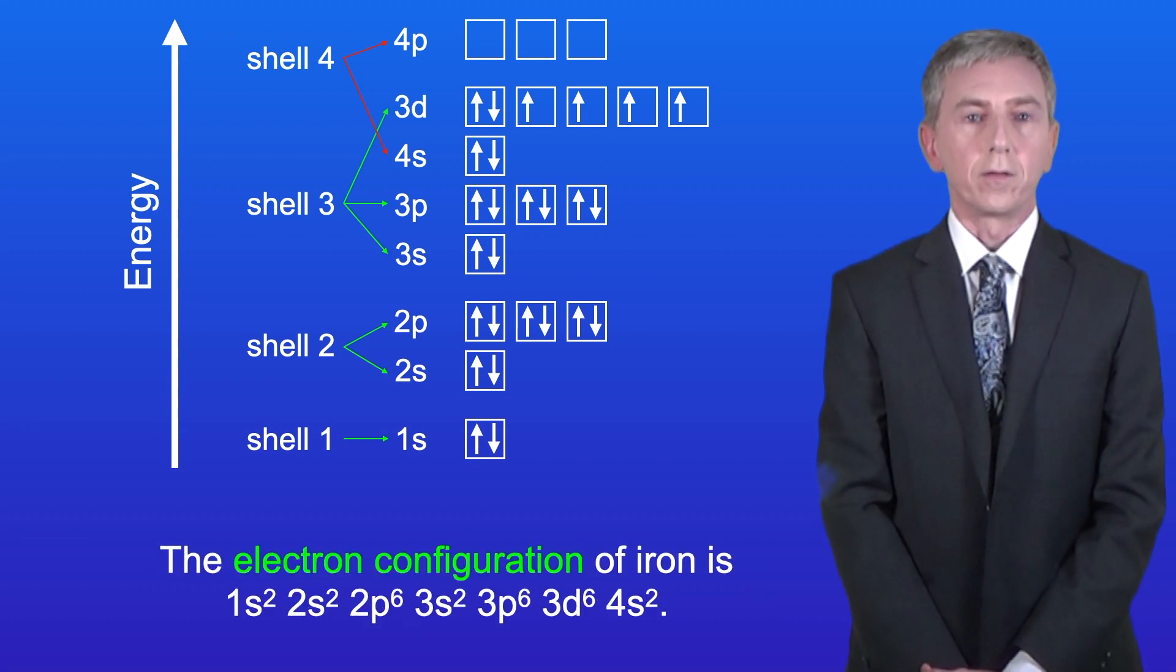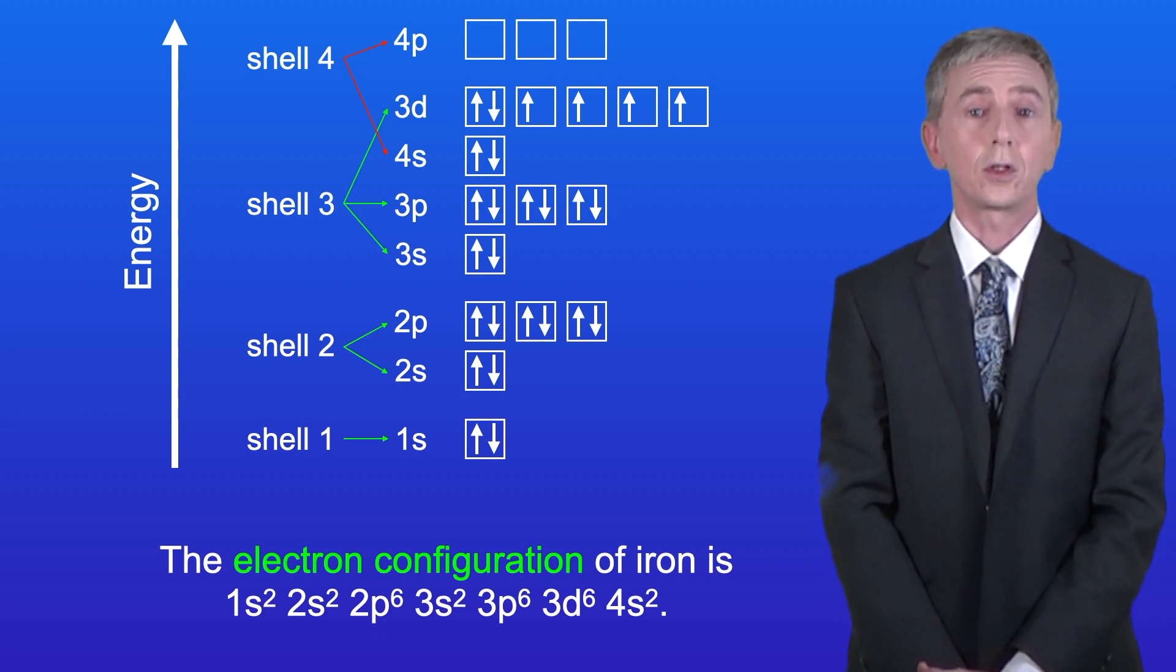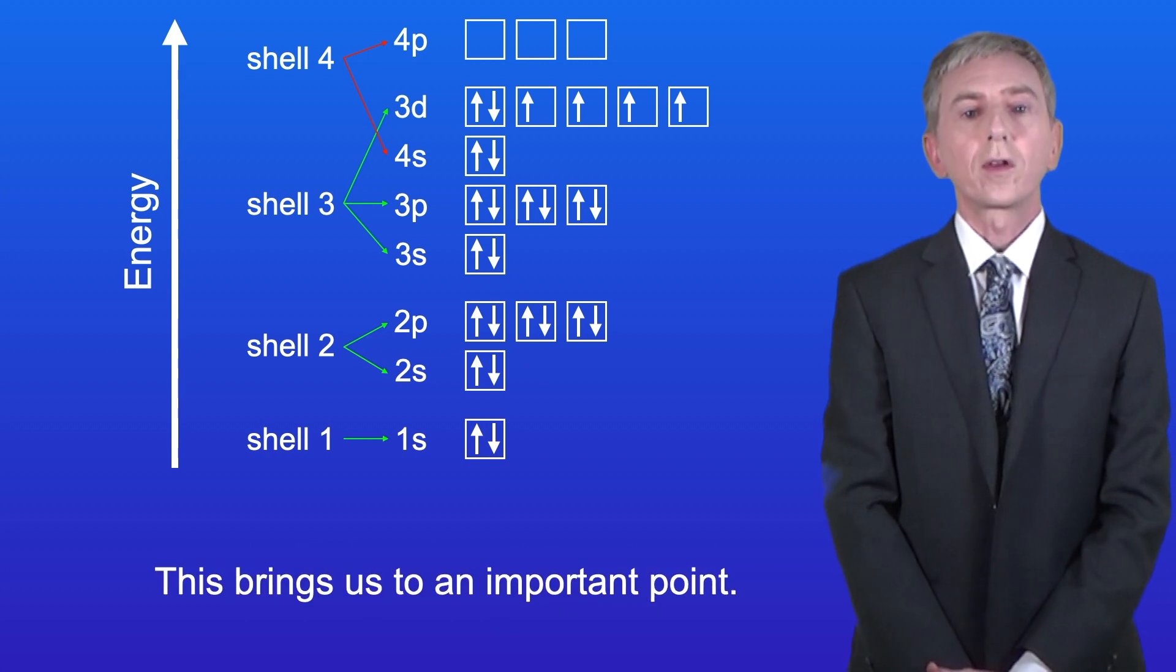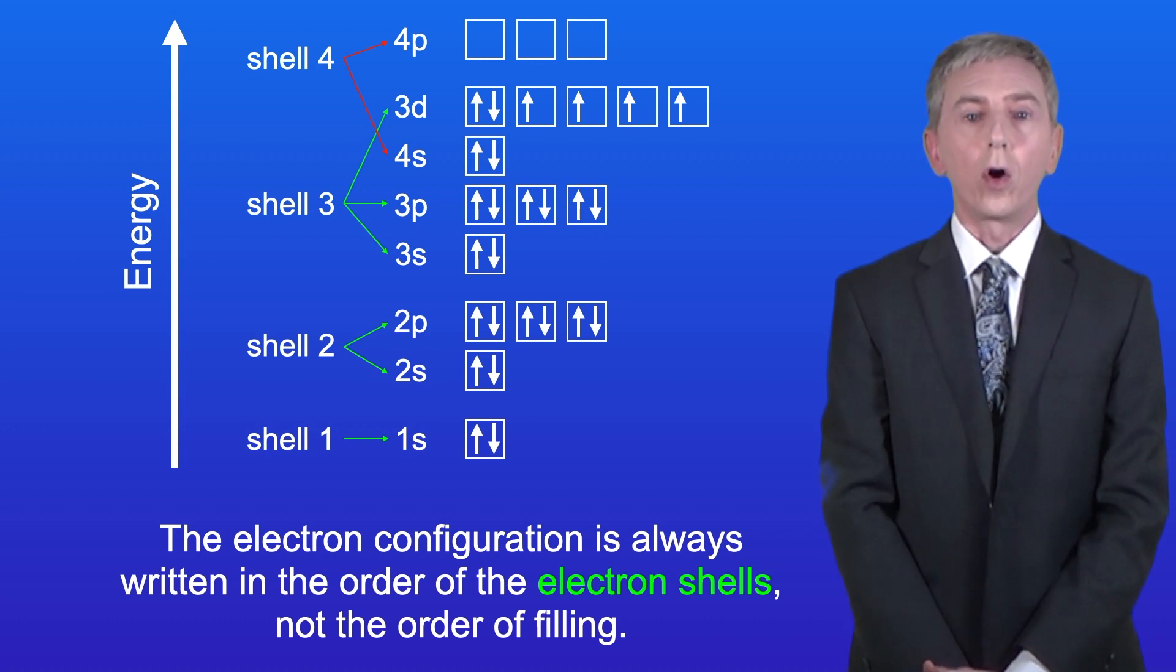The electron configuration of iron is 1s2, 2s2, 2p6, 3s2, 3p6, 3d6, 4s2. Now this brings us to an important point. The electron configuration is always written in the order of the electron shells, not the order of filling.